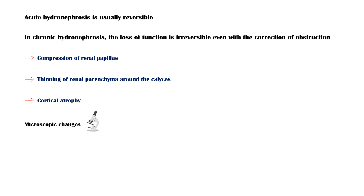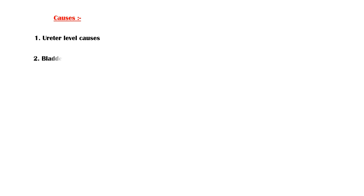Macroscopic changes include flattening of the tubular epithelium due to chronic obstruction and increased collagen deposition. A multitude of causes exist for hydronephrosis and hydro-ureter. These can be broadly categorized into ureter-level causes, bladder-level causes, and urethral-level causes.